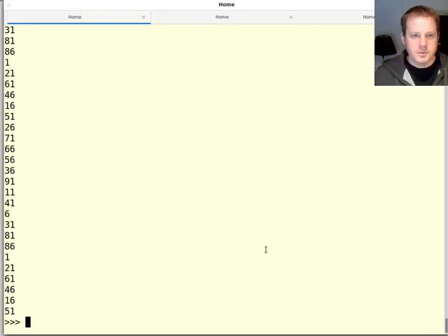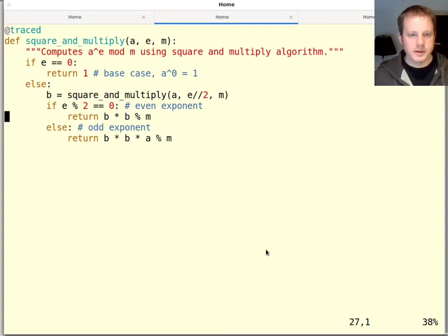So I'll show you in code what this looks like. We have the base case. If the exponent is 0, anything to the 0 power is 1. Otherwise, we do a recursive call with half of the exponent. So this is the key that the exponent gets divided by half. And then if it's even, we just square that mod m.